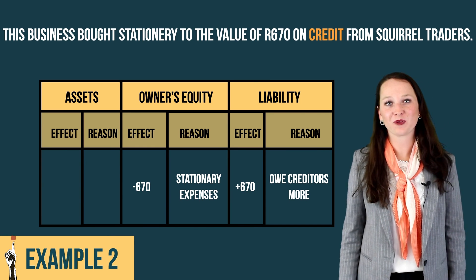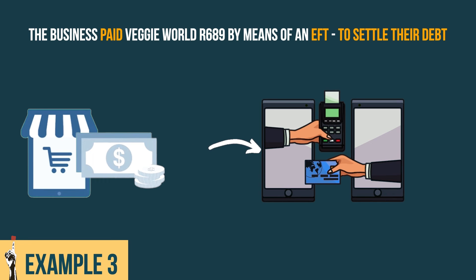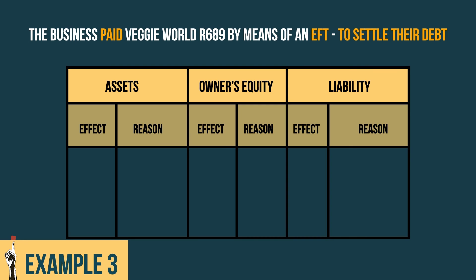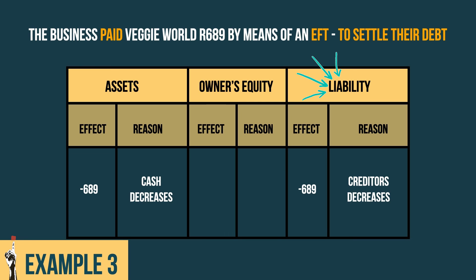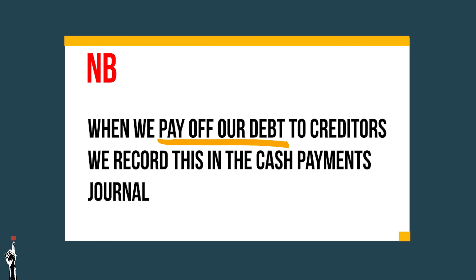Let's look at the last example. The business paid Veggie World 689 rand by means of an EFT to settle their debt. If the business pays off its debt to a creditor, their cash, which is an asset, will decrease. The amount owed to the creditor decreases. Creditors are a current liability for a business and therefore the current liabilities will decrease. The source document in this transaction will be the EFT reference number. When we pay off our debt to creditors, we record this in the cash payments journal.